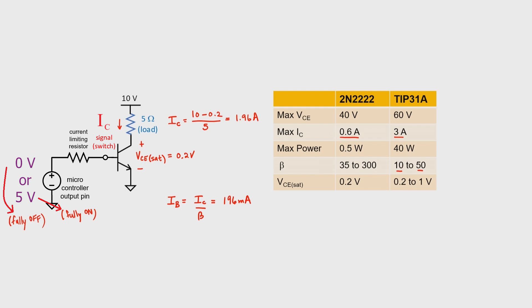Can a typical microcontroller give us 196 milliamps out of one of its signal pins? I don't know, but not usually. That means we have a problem. We might not be able to turn the transistor on enough to supply the required collector current to drive our load. So what can we do about it? We can turn to the Darlington configuration.